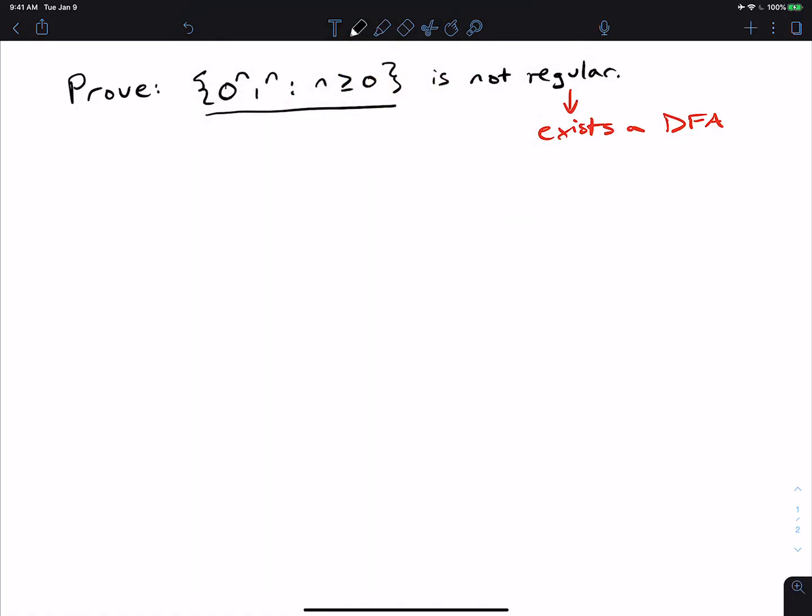So if we want to prove this, one method we can go about doing it is supposing that a DFA exists, and then reaching some kind of contradiction. So suppose a DFA D exists for this language.